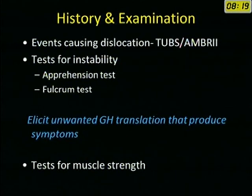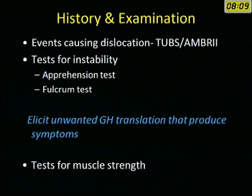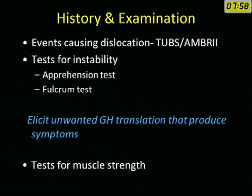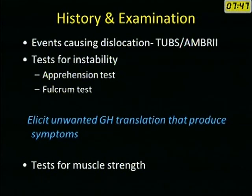When examining a patient with recurrent anterior dislocation, the important thing to take in history is what caused the initial dislocation — whether it was a significant injury, making it TUBS, or a very minor activity, classifying it as AMBRI. On testing, it is important to elicit unwanted glenohumeral translation that produces symptoms of instability and apprehension, using the apprehension test and the fulcrum test. You also test for muscle strength to diagnose any rotator cuff injury.